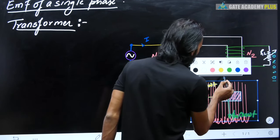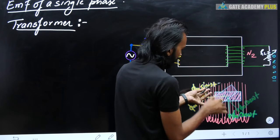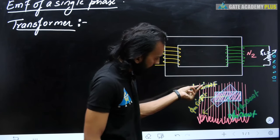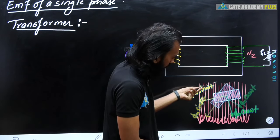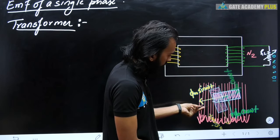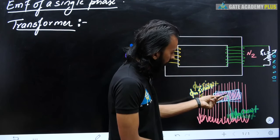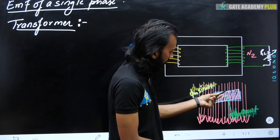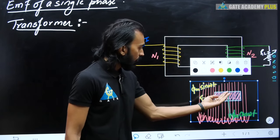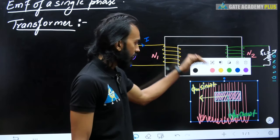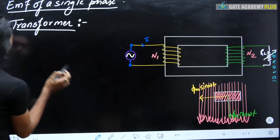As the coil rotates in this direction, you can see how the components change and vary. When the coil is at a particular position, the φₘsin(ωt) component acts perpendicular to the field.